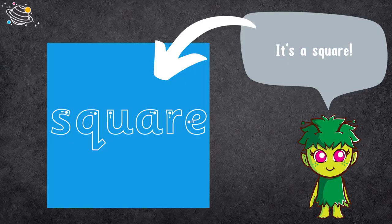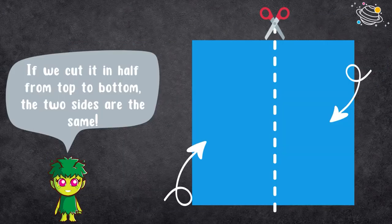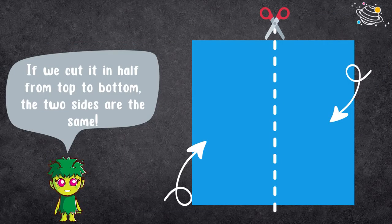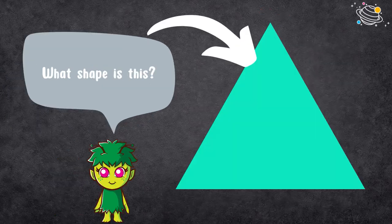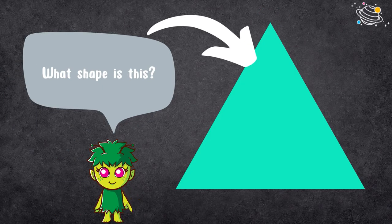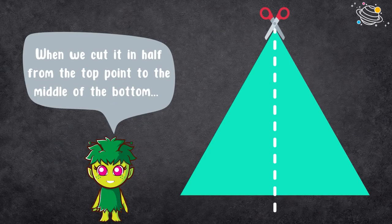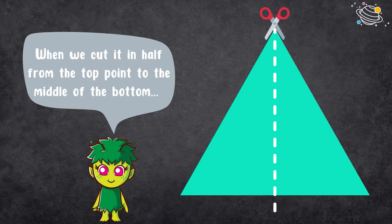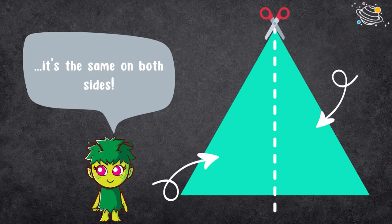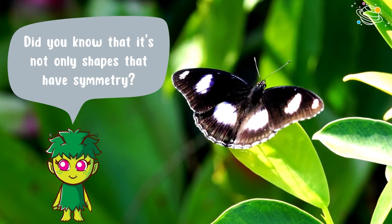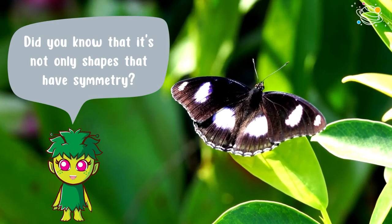What shape is this? It's a square. If we cut it in half from top to bottom, the two sides are the same. What shape is this? It's a triangle. When we cut it in half from the top point to the middle of the bottom, it's the same on both sides. Did you know that it's not only shapes that have symmetry?